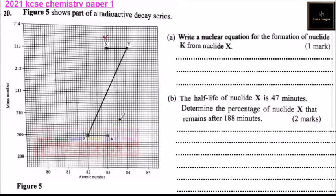An alpha particle is helium (He) with mass number 4 and atomic number 2. Looking at X in the figure, the mass number is 213.